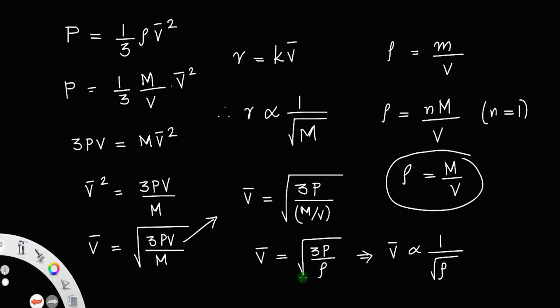Since rate is proportional to velocity, rate of diffusion is inversely proportional to the square root of density. This is how you derive Graham's law from the kinetic theory of gases.